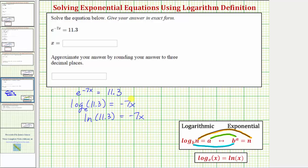And now we can easily solve for x by dividing both sides by negative seven. Simplifying, we have x equals, we can leave this as a quotient.